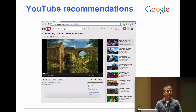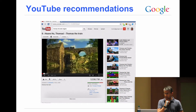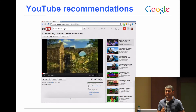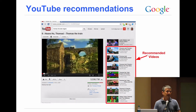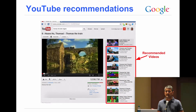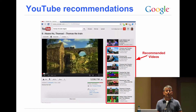Let me get into machine learning itself with an example from YouTube. Here is a screenshot of a YouTube page where the viewer is watching a video about Thomas the Tank Engine. I have a five-year-old, and until recently this was the kind of thing he would watch on YouTube. He's just learning how to read and write, so when he would watch Thomas the Tank Engine, he couldn't use the search box to decide what to watch next. Instead, he would use the recommended videos on the right-hand side. A lot of our users actually use these recommendations to decide what to do next, so recommended videos is a very important part of the YouTube product.